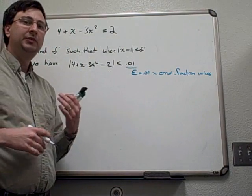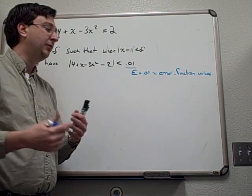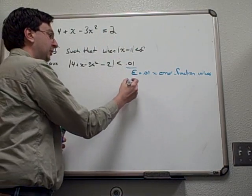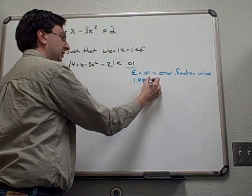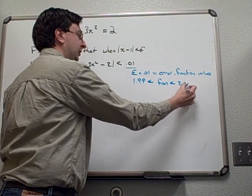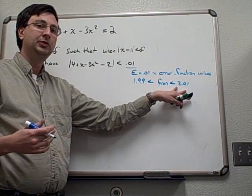We're thinking in terms of an application where the function's output is going to be allowed to go from, in this case, 1.99 to 2.01. So we're letting the function stay within this interval. And what we're trying to find is what inputs guarantee me that this inequality is going to hold true.